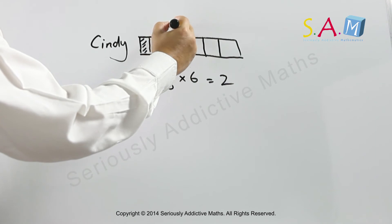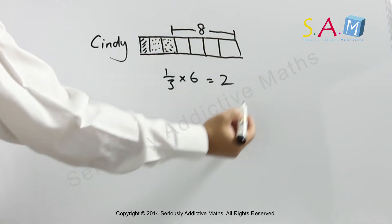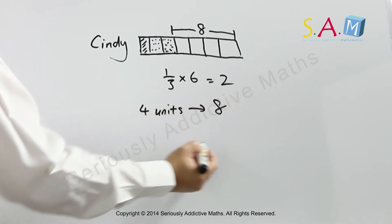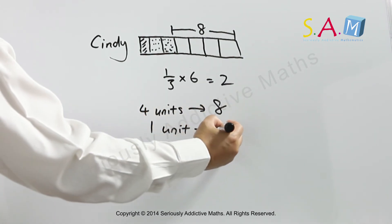And we're told that she has eight sweets remaining. So we have four units as eight sweets. So one unit would be two sweets.